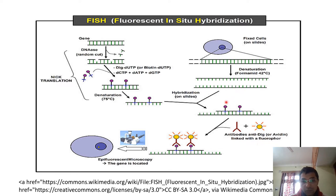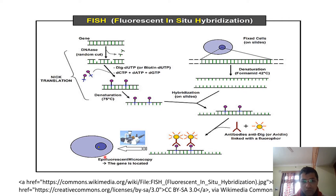Then you use some antibodies. These antibodies are against the DIG proteins, DIG or biotin proteins, or avidin. They are bound with a fluorescent molecule. Whenever these secondary antibodies bind to this probe, they fluoresce. Under epifluorescence microscopy, you can detect the specific location of this gene in all the chromosomes. This is the fluorescence in-situ hybridization technique.